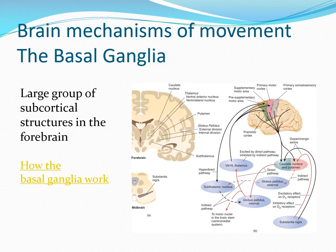We went over this briefly in class before spring break, and I'm going over it again briefly because it helps make sense of movement disorders. In the direct pathway, the substantia nigra communicates to the striatum. When I decide to make a movement, my motor cortex also communicates to the striatum, which includes the caudate nucleus and the putamen.